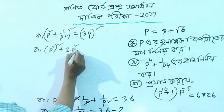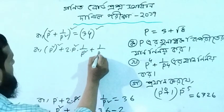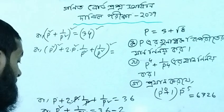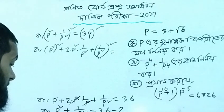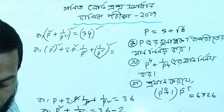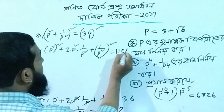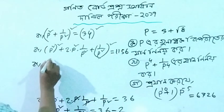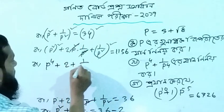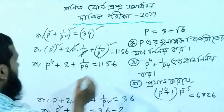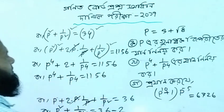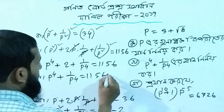Using the identity (A plus B) whole square equals A squared plus 2AB plus B squared, equal to 34. Working through: p squared plus 1 by p squared equals 4 plus 2 plus 1 by p squared equals 4, giving the result minus 2.